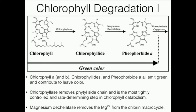Now there's another enzyme here referred to as magnesium d-chelatase, which we're going to go into a little more detail on the next slide. Notice what it does: it takes the magnesium that's chelated in the center of the chlorine ring and removes it.